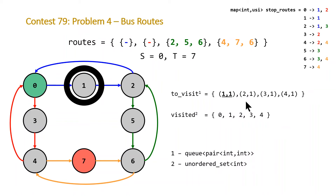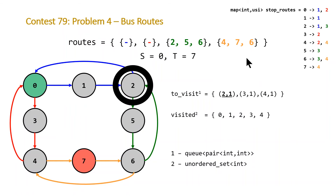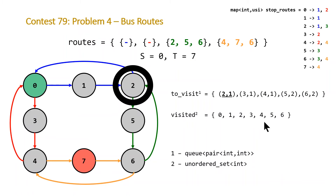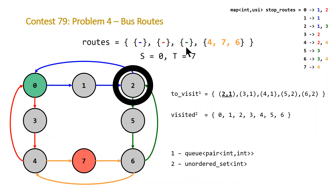We move to stop 1, check the routes — it's only in route 1, which is already empty, so we do nothing. We move to stop 2, it's in routes 1 and 3. Route 1 is empty, but the green route has stops left. We loop through those and for ones not in our visited set, we push stops 5 and 6 onto the queue and insert them into visited. At this point we also clear route 3.